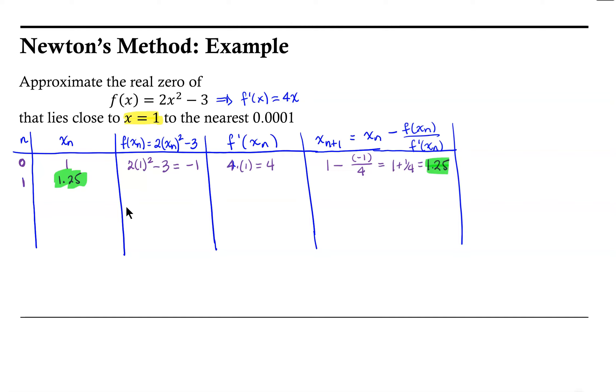And so now we continue. f at xn would be 2 times 1.25 squared minus 3, and that would be equal to 0.125. Our f prime at xn would be 4 times 1.25, and so that would be 5.